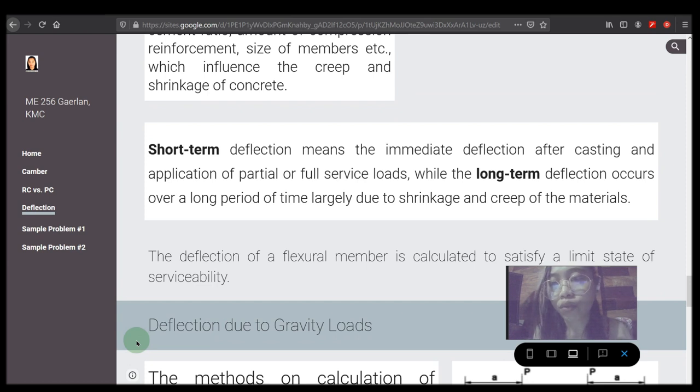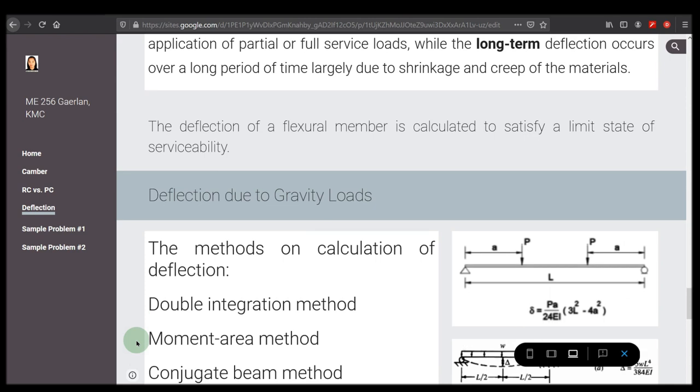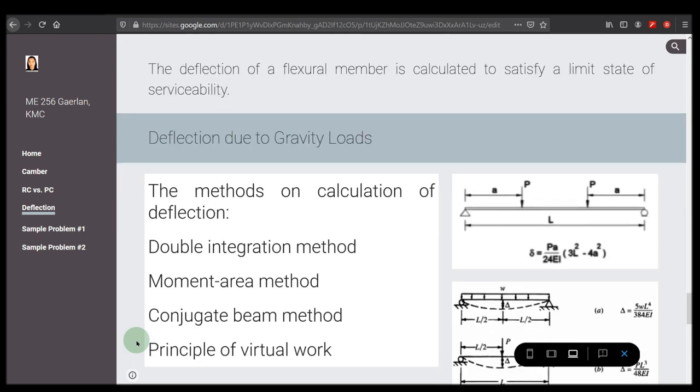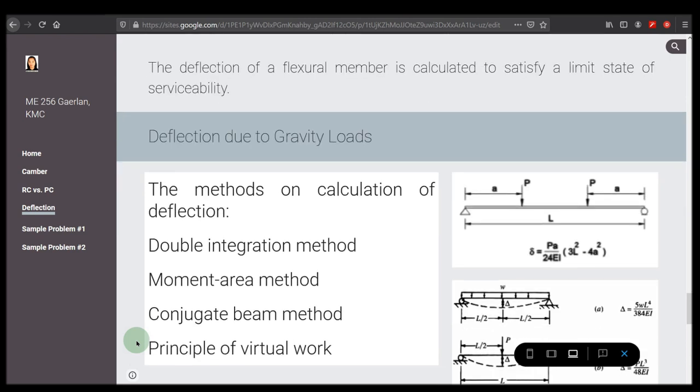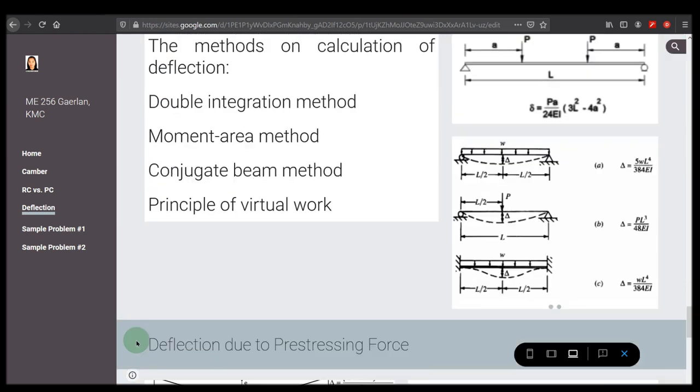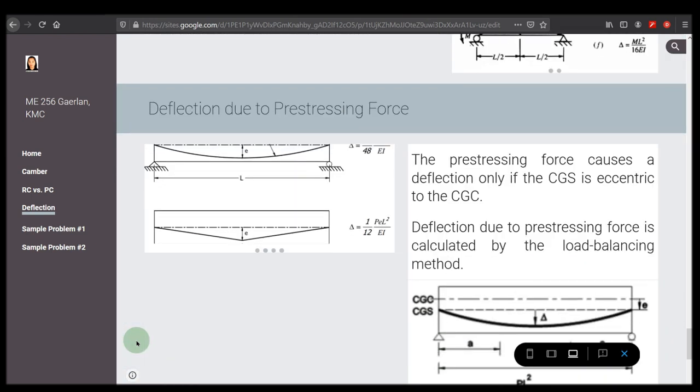To differentiate further, short term deflection means the immediate deflection after casting and application of partial or full service loads, while the long term deflection occurs over a long period of time, largely due to shrinkage and creep of the material. As mentioned from the previous report, different methods for obtaining deflection due to gravity loads were double integration method, moment area method, conjugate beam method, and principle of virtual work.